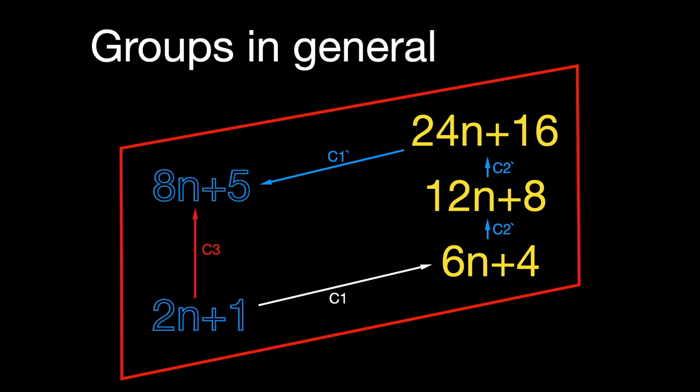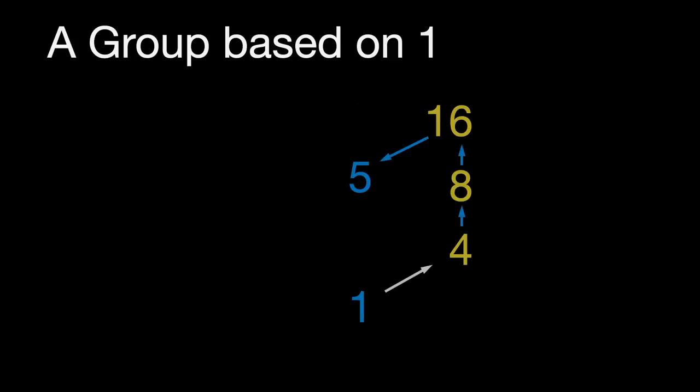A property essential to creating the Collatz tree is that the group begins and ends with an odd number. This means that C3 can be executed repeatedly to create a chain of groups, each one building on the last. Using the starting point of n equals 1, we can see how the rule C3 constructs a chain in the Collatz tree.